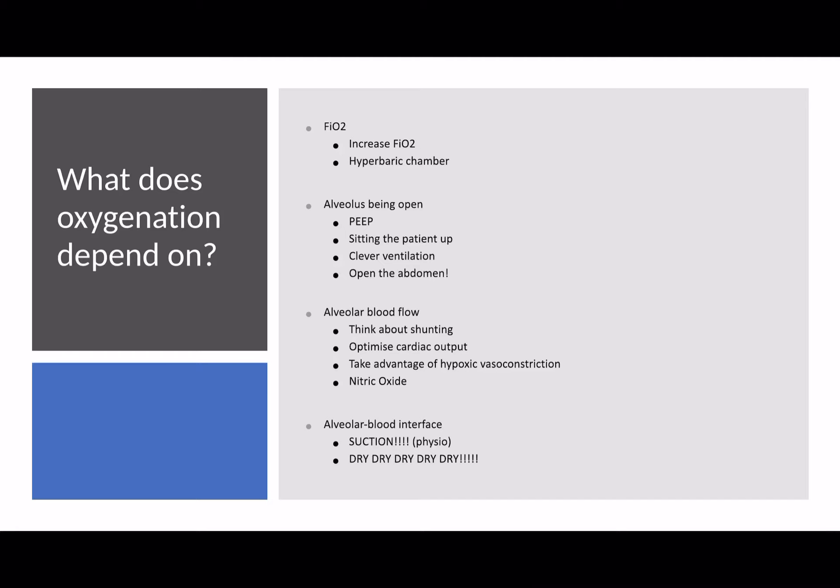In terms of clever ventilation, this includes things like airway pressure release ventilation — I won't go into detail here but there's a whole video series on that. If patients have very raised intra-abdominal pressures, that can push up on the diaphragm, pushing up on the lower lobes and collapsing them. In some cases with significant intra-abdominal pressures, you might think about doing a laparotomy to open up the abdomen and release that pressure. Similarly, if patients have significant ascites, sometimes draining it can improve ventilation.